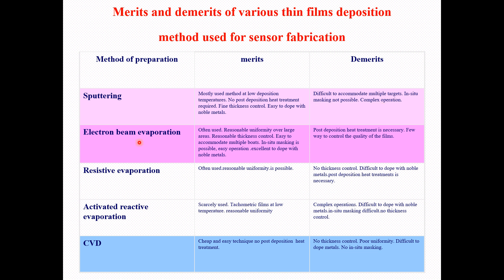For electron beam evaporation, the merits include: reasonably uniform deposition over large areas, reasonable thickness control, easy to accommodate multiple sources, in-situ masking is possible, easy operation, and easy to dope with noble metals. The demerits of electron beam evaporation include: post-deposition heat treatment is necessary — this is one of the key demerits — and very few ways to control the quality of the thin film.